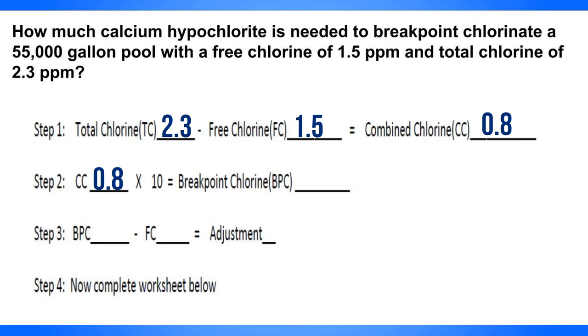CC in step two comes from the end of step one, so we just fill in what we got in step one there. We multiply that by 10. 0.8 times 10 on your calculator will give you 8 there for BPC at the end of step two.